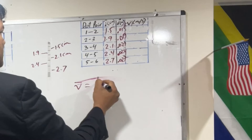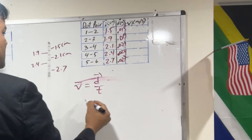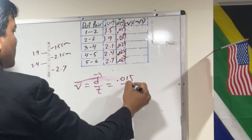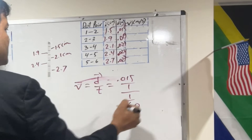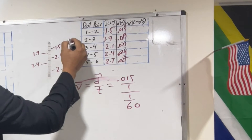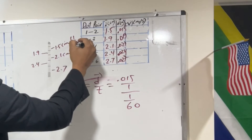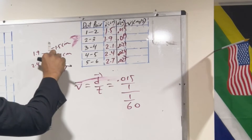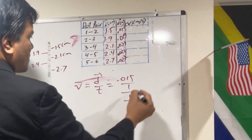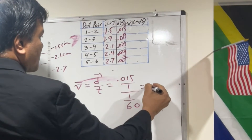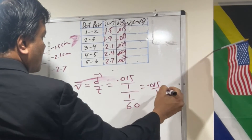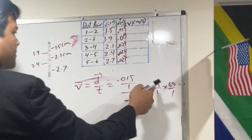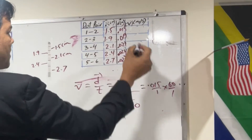Velocity equals displacement over time. So displacement is 0.015 m, and the time interval is 1/60 of a second, because each interval takes 1/60 s. So 0.015 divided by (1/60) — you flip it to multiply by 60.